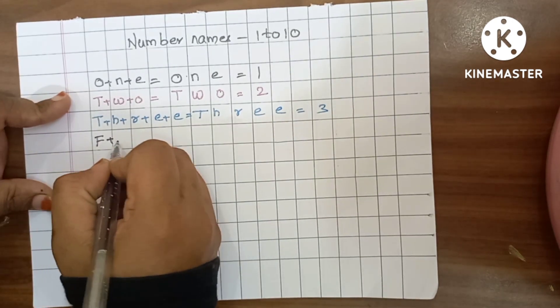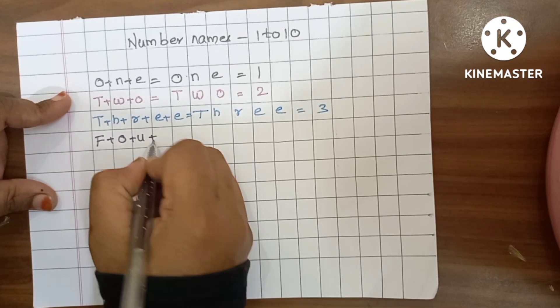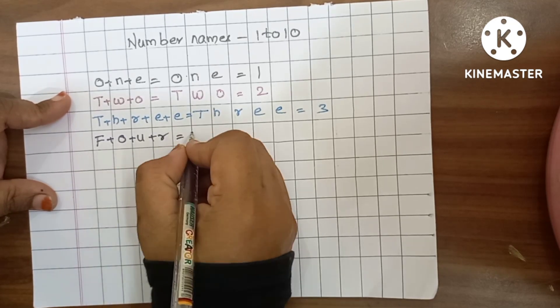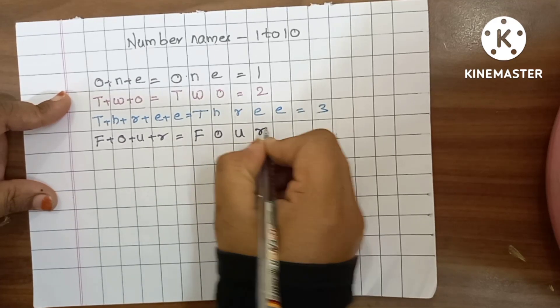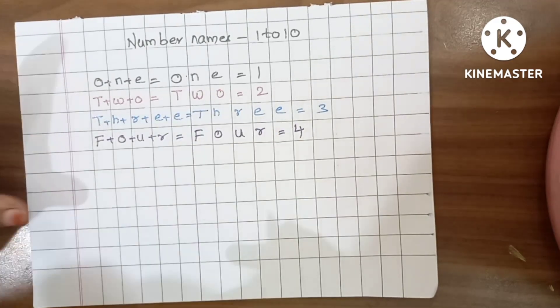F plus O plus U plus R is equals to 4. F, O, U, R, 4, red color.